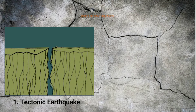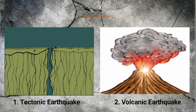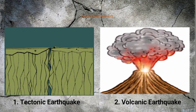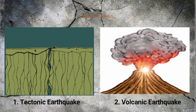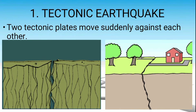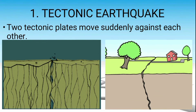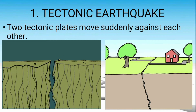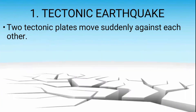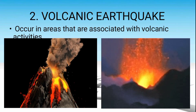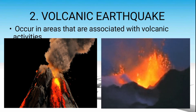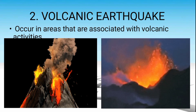We have two kinds of earthquakes. The first one is the tectonic earthquake, and the second one is the volcanic earthquake. Let us now differentiate the two. When we say tectonic earthquake, two tectonic plates move suddenly against each other. While when we say volcanic earthquake, it occurs in areas that are associated with volcanic activities.